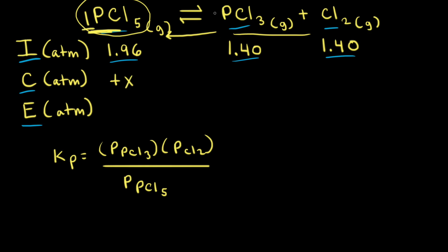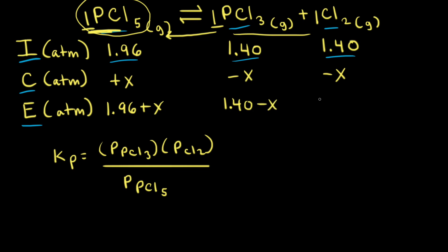Since the mole ratio of PCl₅ to PCl₃ is one to one, if PCl₅ gains X, then PCl₃ loses X. The same applies to Cl₂ with a coefficient of one, so we write −X for both products. Therefore, the equilibrium partial pressure of PCl₅ is 1.96 + X, the equilibrium partial pressure of PCl₃ is 1.40 − X, and the equilibrium partial pressure of Cl₂ is also 1.40 − X.